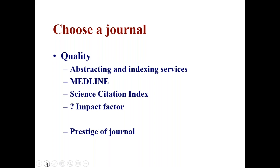The Science Citation Index is a much more exclusive abstracting and indexing service than Medline. At one point in time, across all sciences there were 5,000 journals in the Science Citation Index, while Medline alone for health sciences also had 5,000. The Science Citation Index covers all sciences — life sciences, animal sciences, physical sciences, chemical sciences, mathematics, physics, chemistry — and from India at one point there were only four journals included.